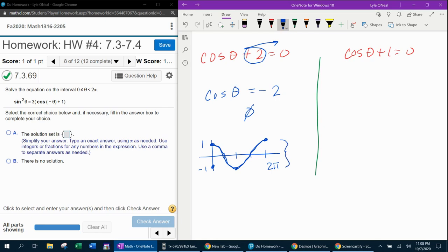Do you see that it has to be contained between negative one and one? That means that cosine of theta can never be any value outside of negative one to one. Negative two is not within that range of values. And that's why this factor does not produce a solution.